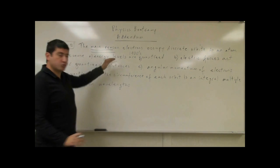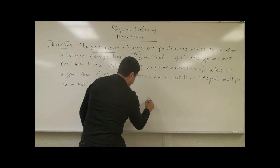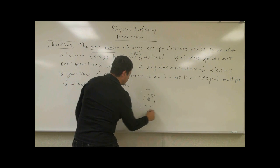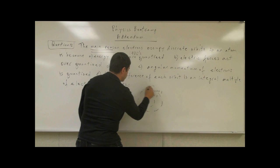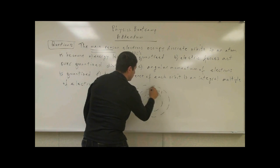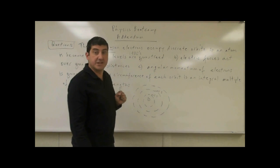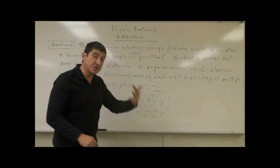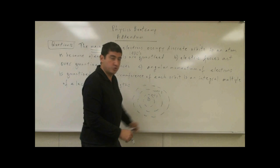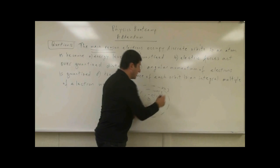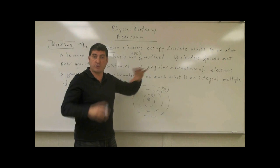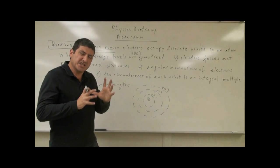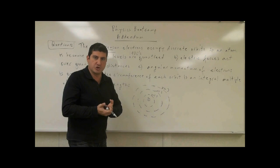It is true that electron orbits around the nucleus all occupy different orbits, and each orbit has different energy. As you go from n equals 1 to n equals 2, the energy is less; from n equals 2 to n equals 3, the energy is even less. The energy decreases and is quantized, but this doesn't get to the bottom of why the energy is quantized.